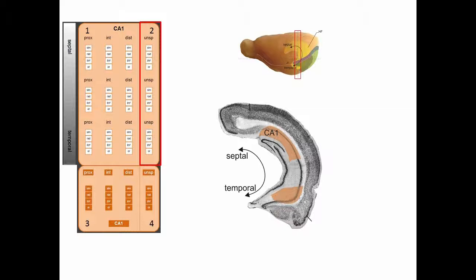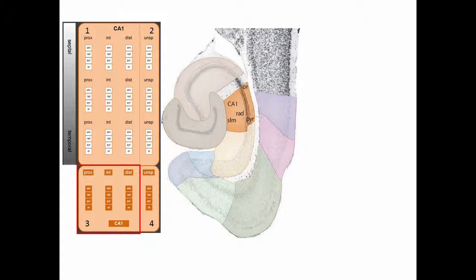Quadrant 2 describes connections of CA1 at the level of layers and along the septotemporal axis. Quadrant 3 describes connections of CA1 along the proximal distal axis and layers.